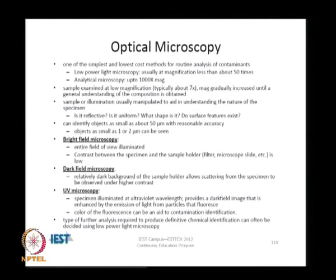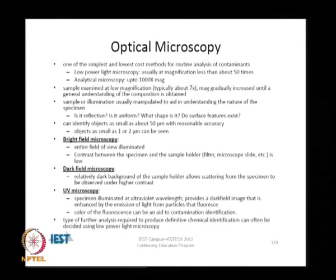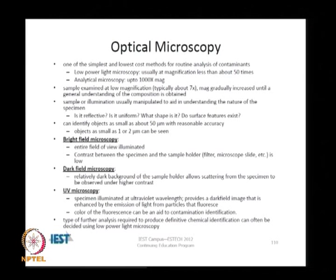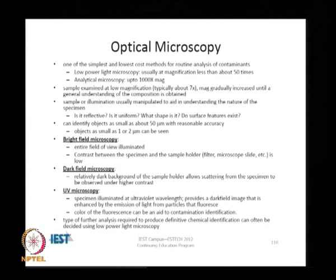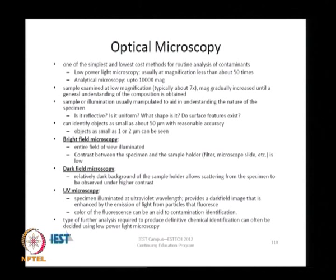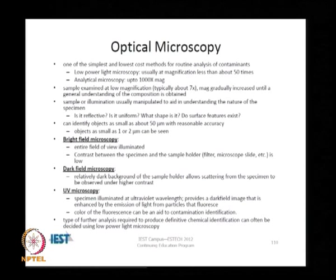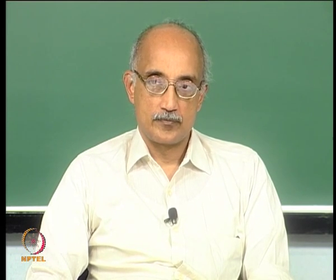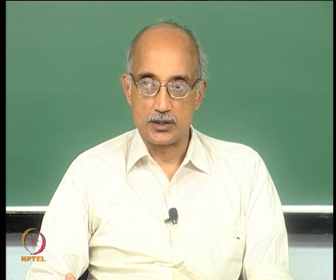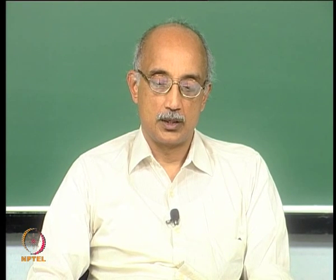There is bright field microscopy, dark field microscopy, and UV microscopy. In bright field, you illuminate the entire field of view and examine the contrast between the specimen and the holder. In dark field microscopy, you use a dark background and allow particles to appear as bright spots. In UV microscopy, you illuminate the specimen with UV wavelength, which is particularly useful for detecting particles and materials that fluoresce. Low power light microscopy is only a starting point — it allows you to decide what additional analysis is needed, such as whether the substance is metallic or non-metallic, organic or inorganic.